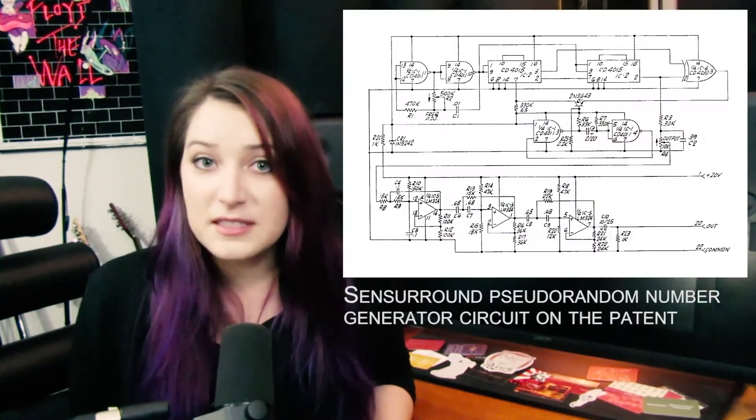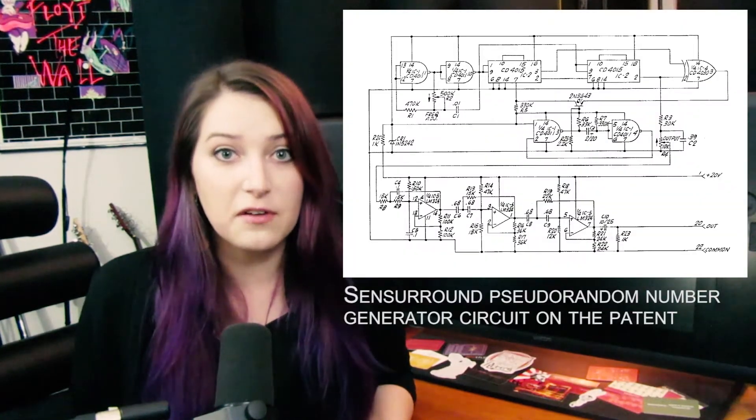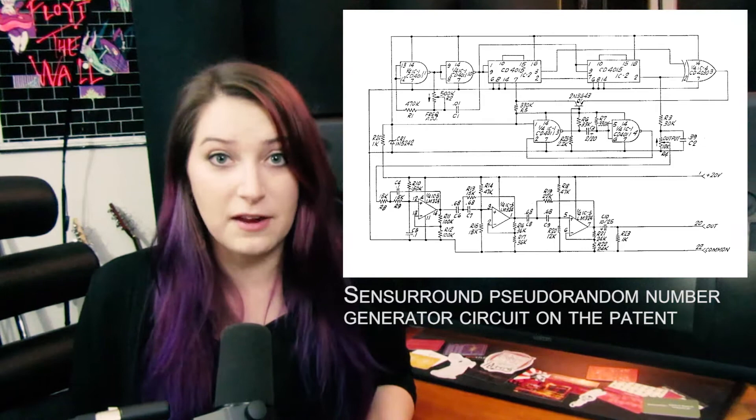But how did SenseRound work? It used control tones that were printed onto optical film tracks to trigger a pseudo-random noise. This means that there was a sound generator that created a pseudo-random sound that ranged between 17 Hz and 120 Hz. At the time, anything below 40 Hz actually couldn't be reproduced using the traditional audio track used for films, so SenseRound actually didn't print this low-end information onto any audio track.